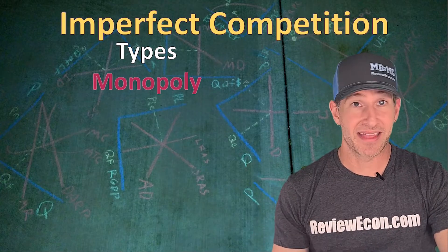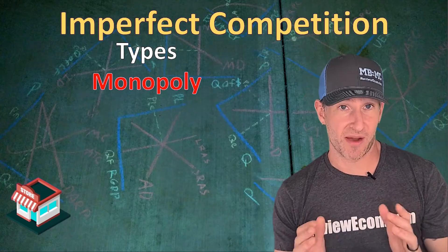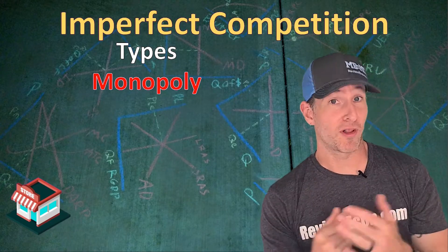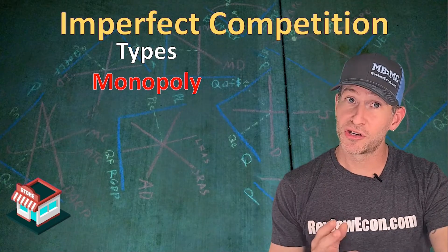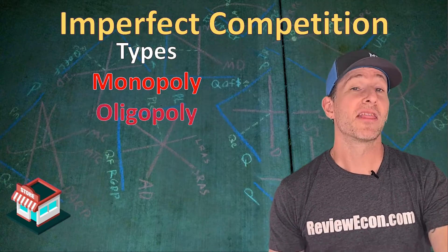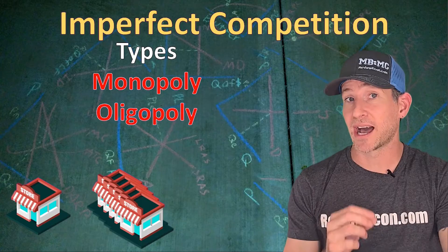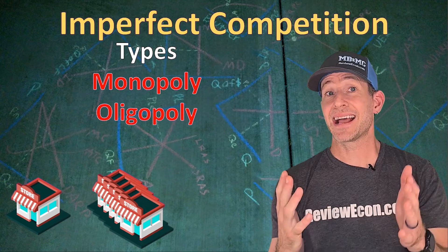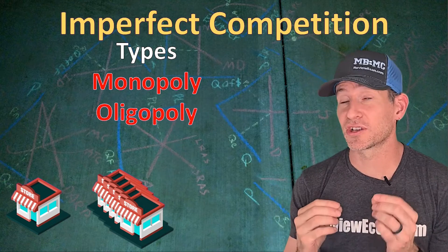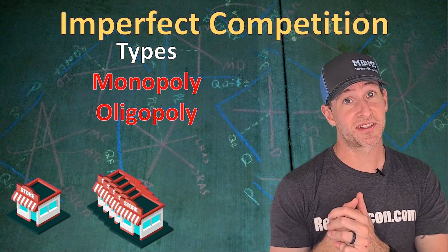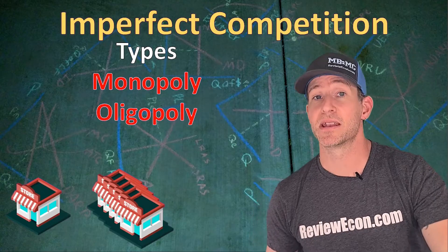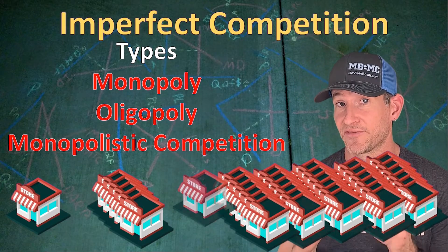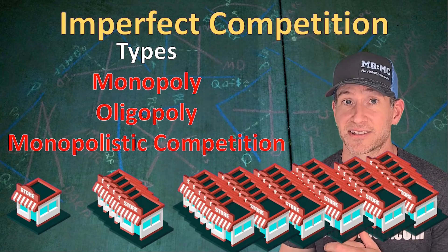The first type is a monopoly — that's where one business dominates an entire market, and that's the imperfectly competitive market that most people already know a little bit about. But there are two other imperfectly competitive markets. The first one is an oligopoly, a market structure where just a few large firms dominate the market. And the last imperfectly competitive market is monopolistic competition, the market structure most businesses find themselves competing within, with lots of businesses that differentiate their products and have lots of competition.